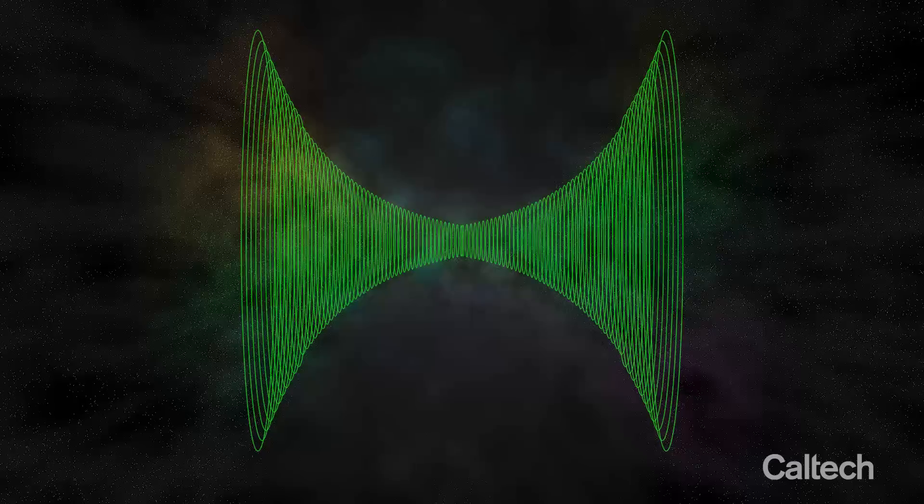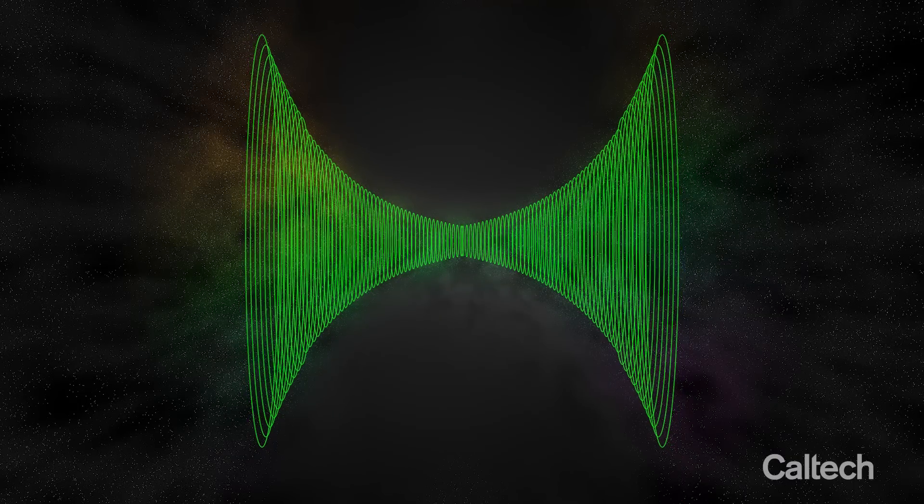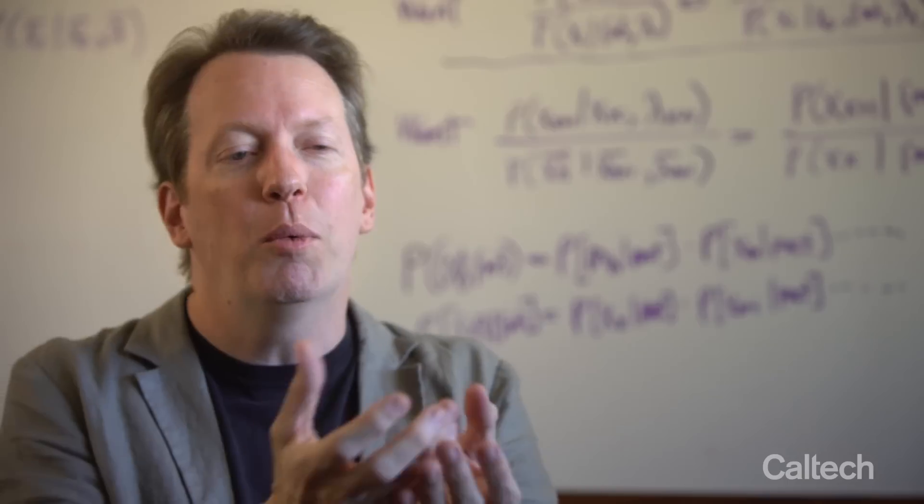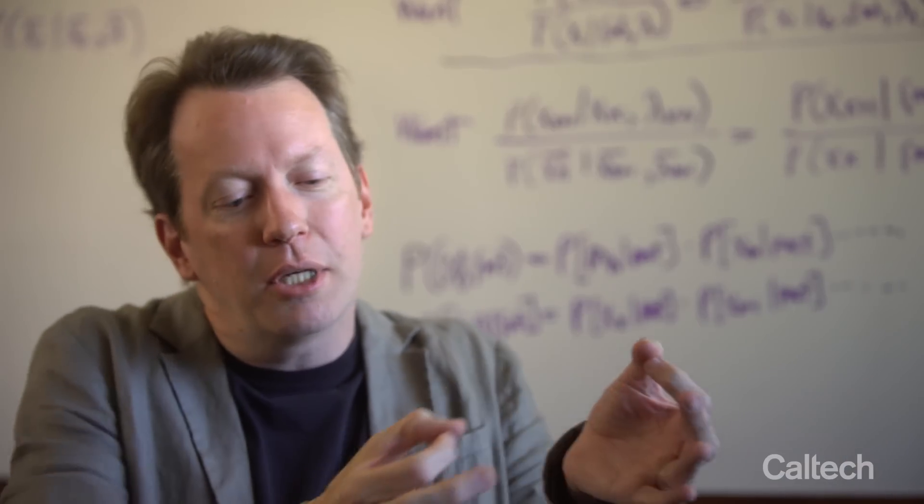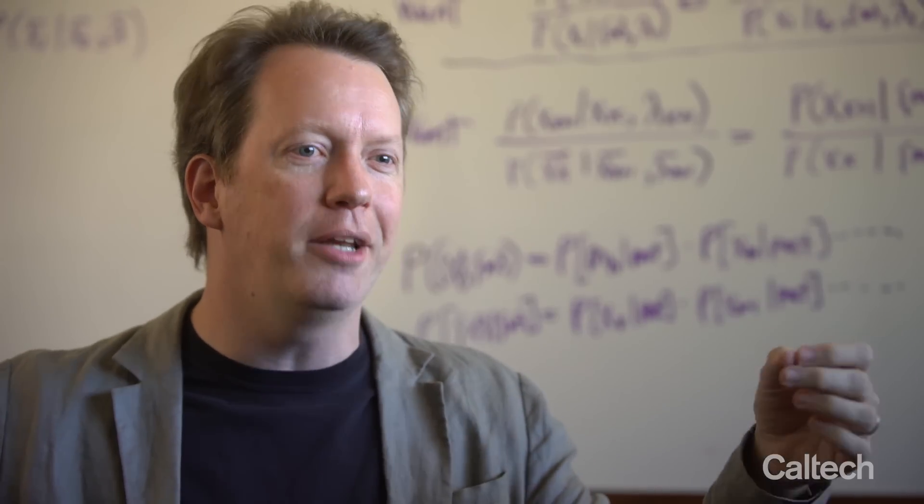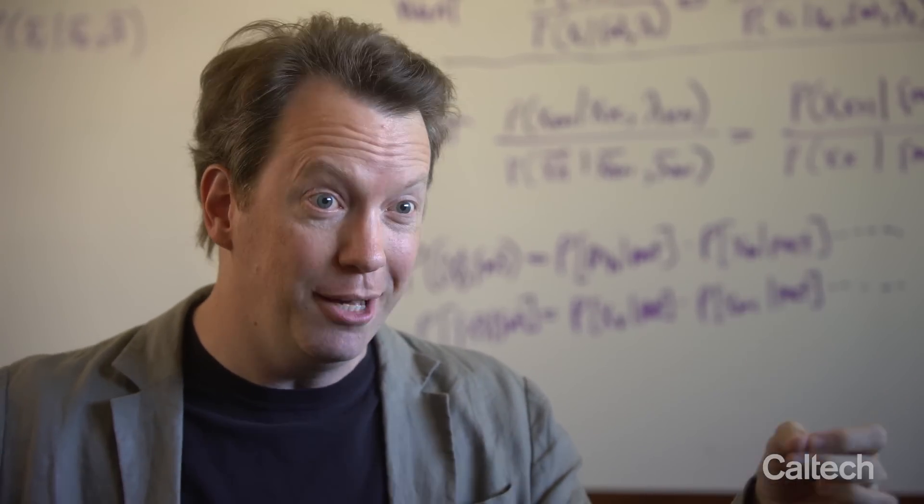A wormhole is just a shortcut through spacetime, a little tube that connects one part of the universe to the other. And when they were inventing them, they were just doing classical general relativity. But what you get at the end of the day is a little connection between two parts of the universe that should at least remind you of quantum entanglement.